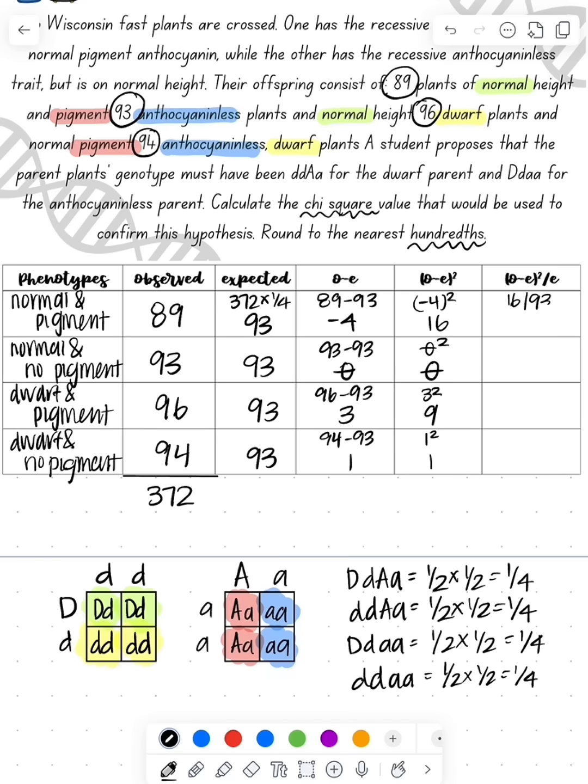Then we take that value and divide by our expected. So we have 0.172, we have zero, then we have 0.097, and then we have 0.011. Then we add all those together, we get our chi-square value and 0.28.